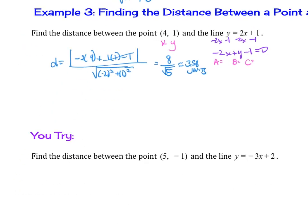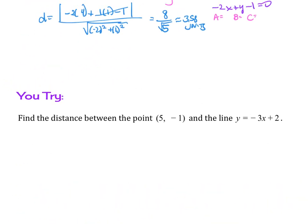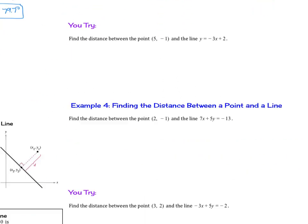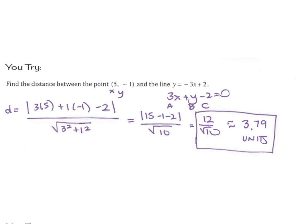Try this example: find the distance between the point (5, negative 1) and the line y equals negative 3x plus 2. You should get 12 over root 10, or approximately 3.79 units.